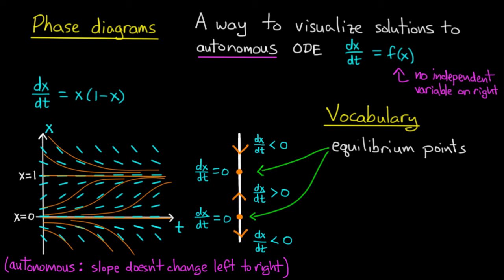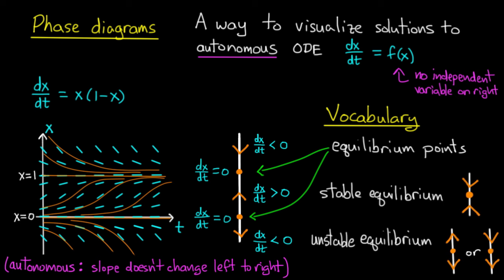Now these equilibrium points have different properties. This equilibrium point at x equals 1 we call a stable equilibrium. We call it stable because both of the arrows are pointing in. So you imagine that if you were to start off close to x equals 1, either above it or below it, you would tend toward x equals 1. And that's what makes it stable. It's like the bottom of a valley.